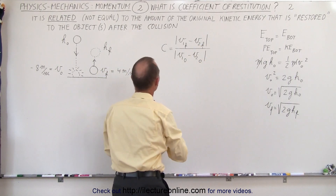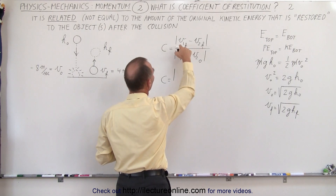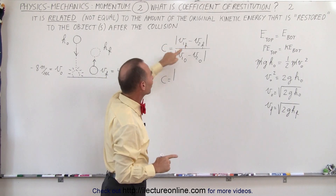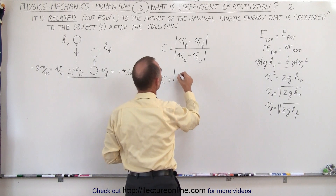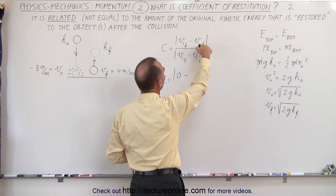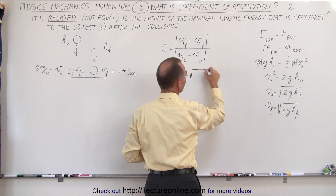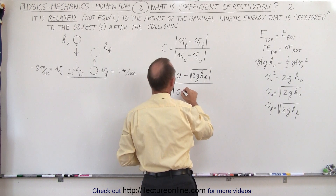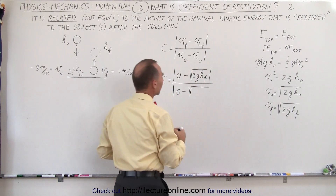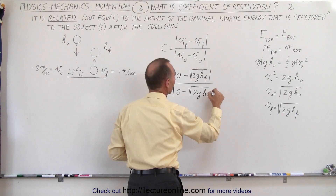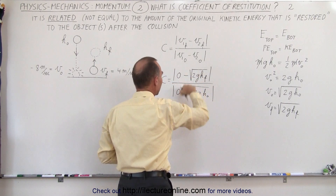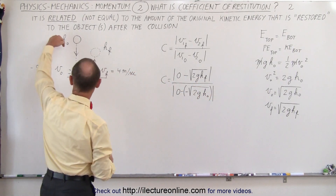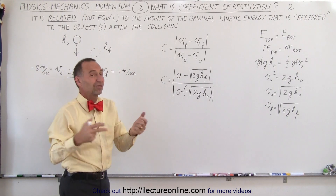If we plug these two values into the coefficient of restitution formula, we get c equal to the absolute value of: the velocity of the floor after the collision minus the velocity of the ball after the collision — which is the square root of 2gh final — divided by the velocity of the floor before the collision minus the velocity of the ball before the collision — which is the square root of 2gh initial. The floor's velocity is zero in both cases, and because of the absolute value signs, the sign of the ball's velocity directions doesn't matter.